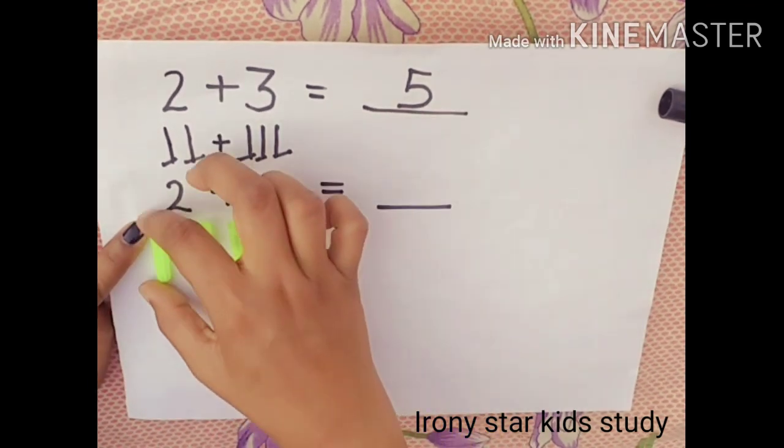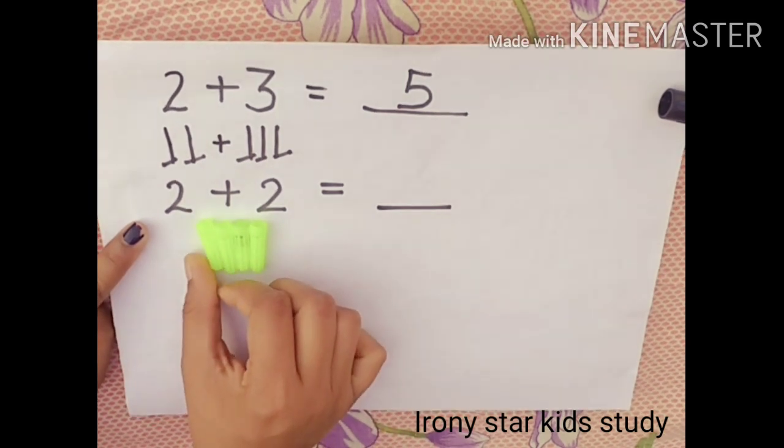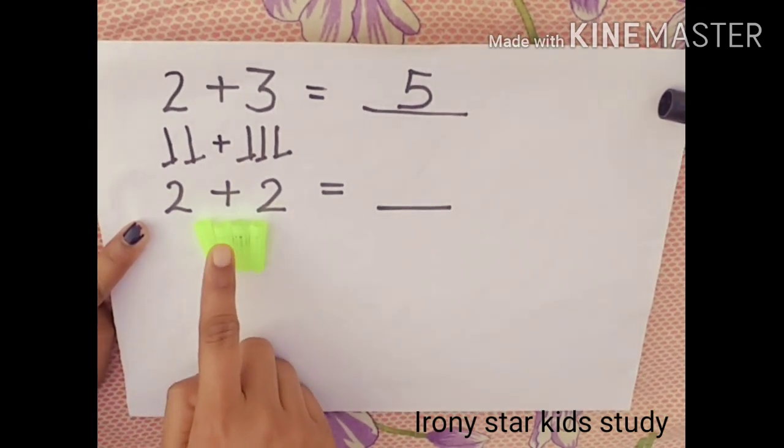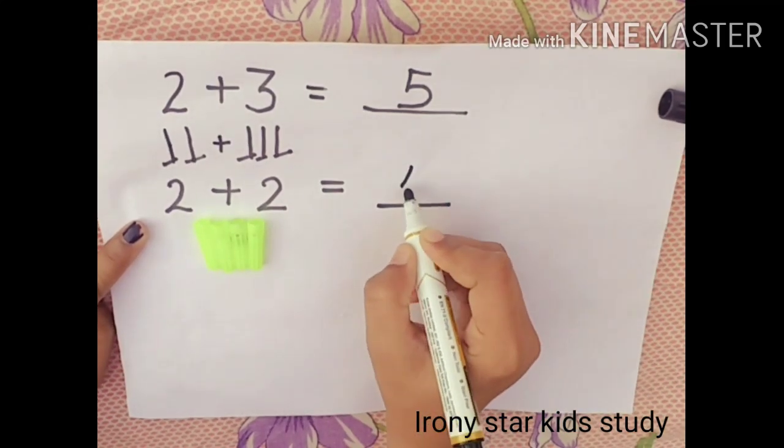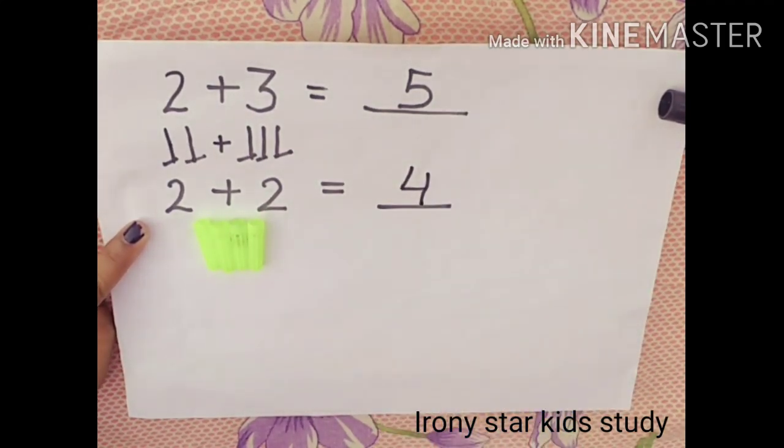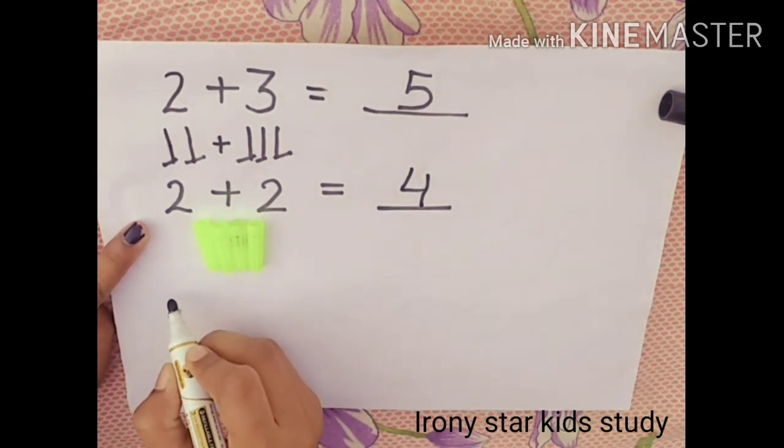Here are the 4 caps, so 2 plus 2 in the underline it will come 4 caps.